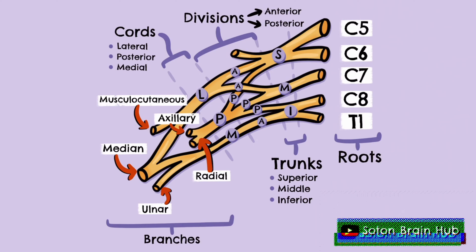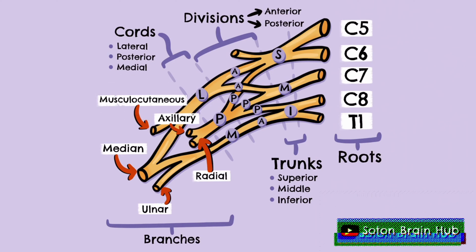The lateral cord divides into its terminal branch, the musculocutaneous nerve, which innervates the muscles in the anterior compartment of the upper arm. The lateral cord also contributes in part to the median nerve, which innervates many of the lateral flexors of the hand.